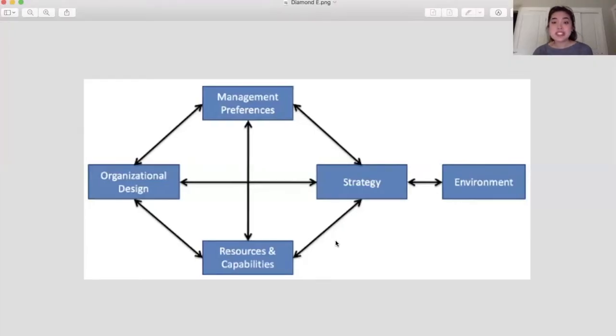So you should be able to see the Diamond E Framework now, and this framework is a comprehensive tool that helps you to organize and analyze the key variables that must be considered when making strategic decisions. Through the Diamond E Framework you will be able to one, assess the company's current strategy; two, generate new ideas for change; and three, evaluate these proposals in the overall context of the business.